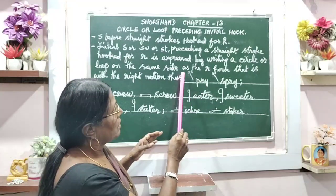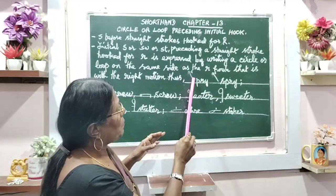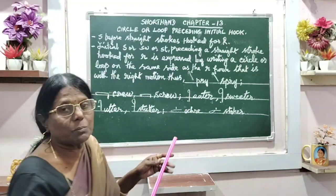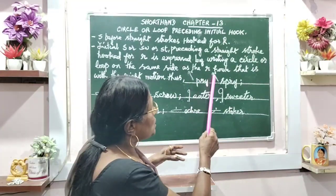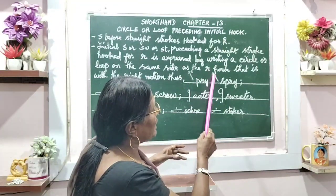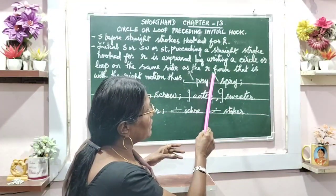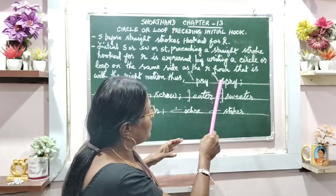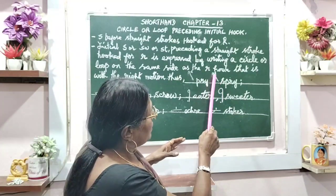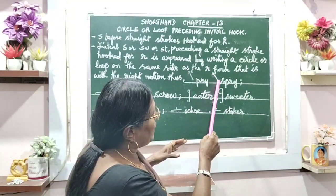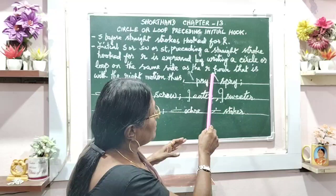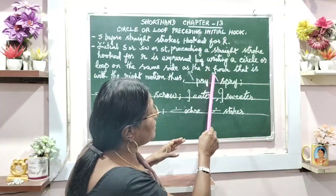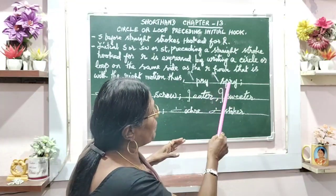This is pry — P, R, I is the diphthong, pry. When a circle is added it becomes spry, SPR. The R sound is also added, therefore spry.